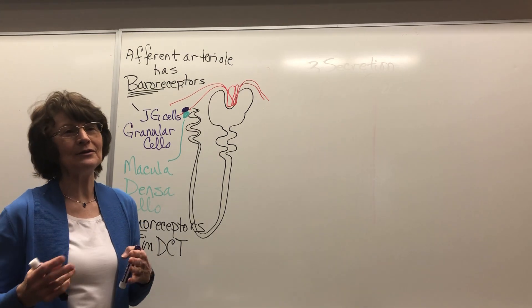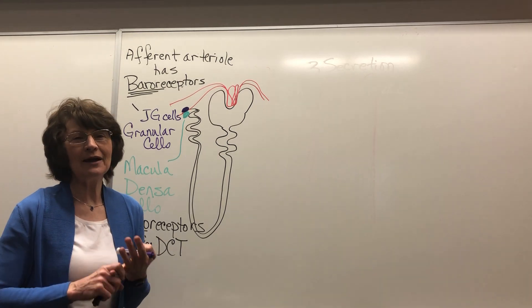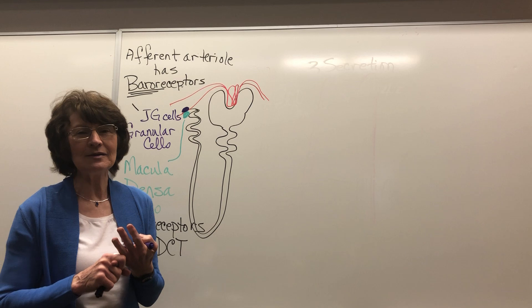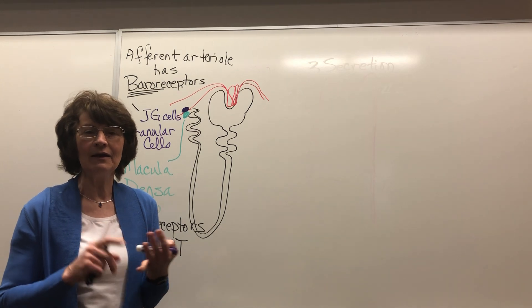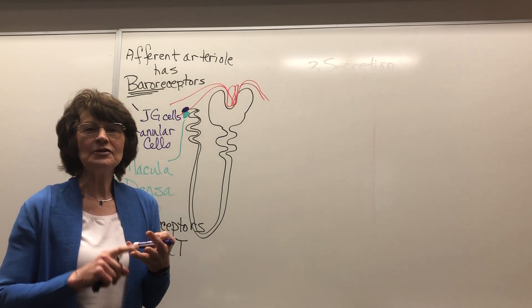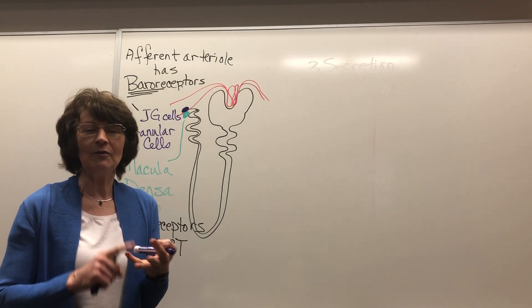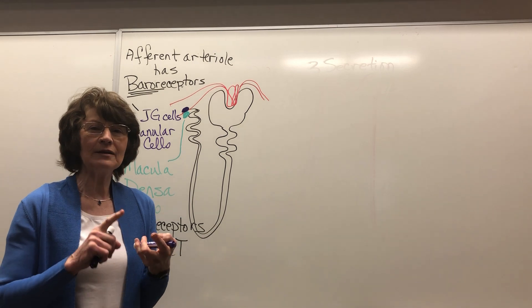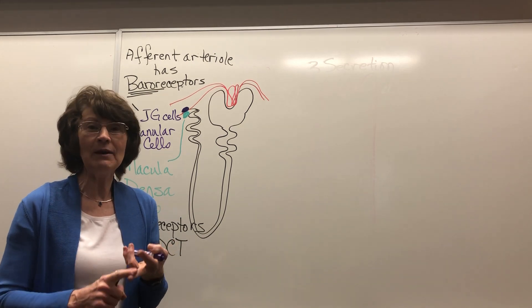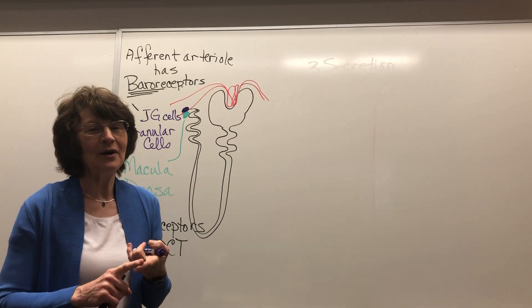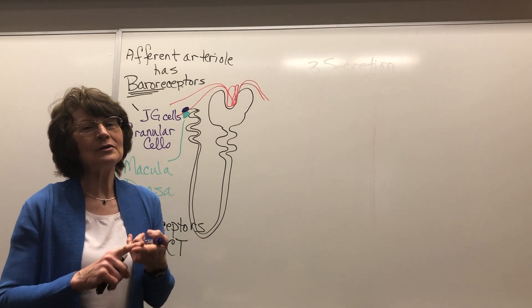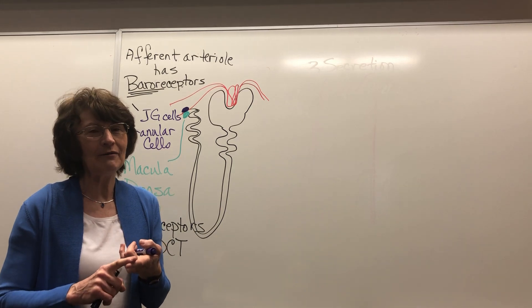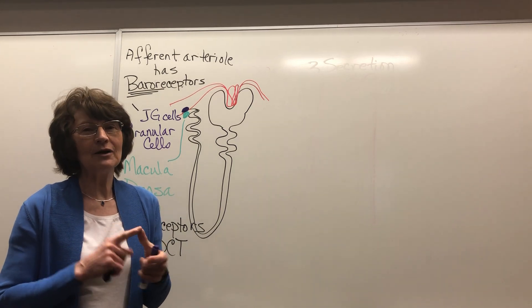What does renin do? What does it act on? I want you to go with me on this cycle. Renin acts on angiotensinogen. What does it become? Angiotensin 1. What does it become? Angiotensin 2. What does angiotensin 2 cause the release of? Aldosterone.